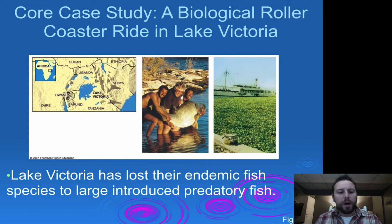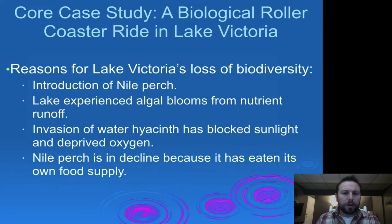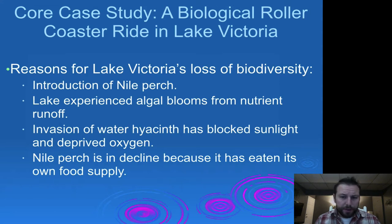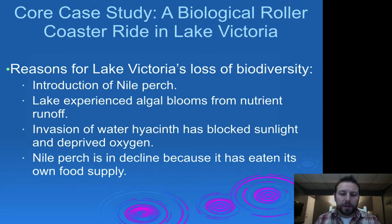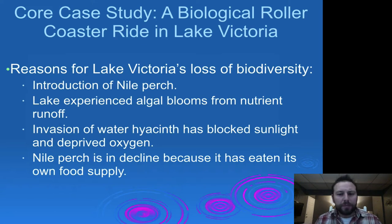If we take a little trip to Lake Victoria, we've noticed that there's been a decline in their endemic fish populations — populations of fish that were natural to that area. The Nile perch was introduced into the lake and basically outcompeted the endemic fish there. They also experienced algae blooms from nutrient runoff from nearby cities, an invasion of the water hyacinth that blocked sunlight and deprived those waters of oxygen. And then the Nile perch itself is now in decline because it has eaten its own food supply — used up so much of the biomass that it can no longer sustain itself.